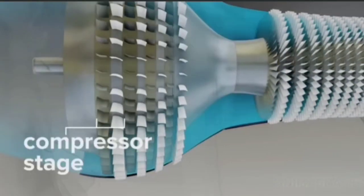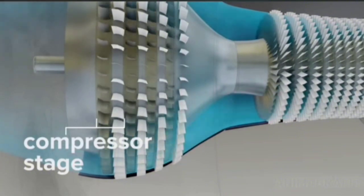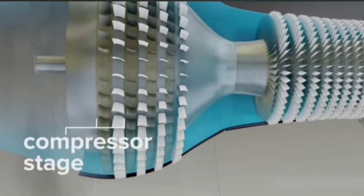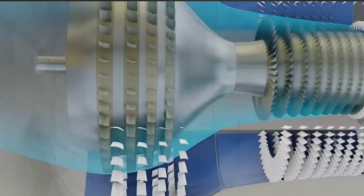A single compressor stage is comprised of a spinning rotor paired with a ring of stationary stator vanes, which are attached to the core casing.